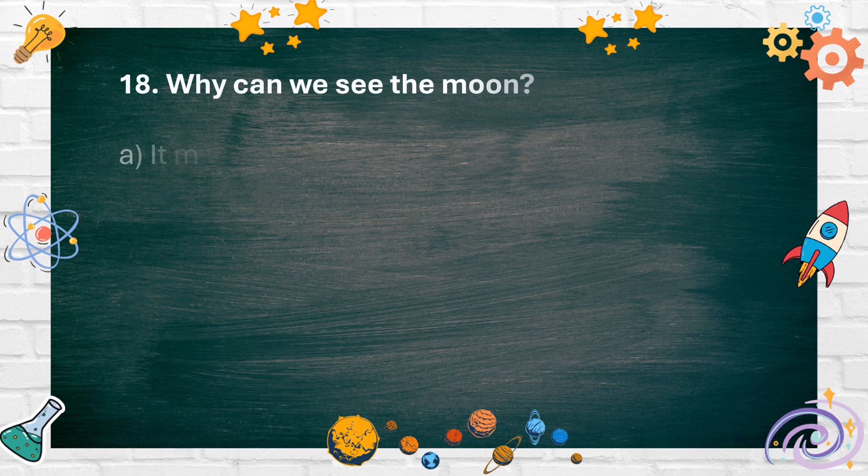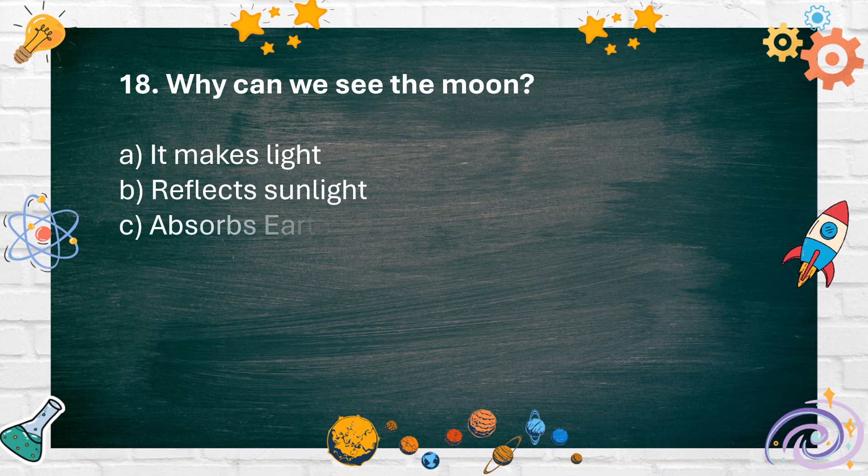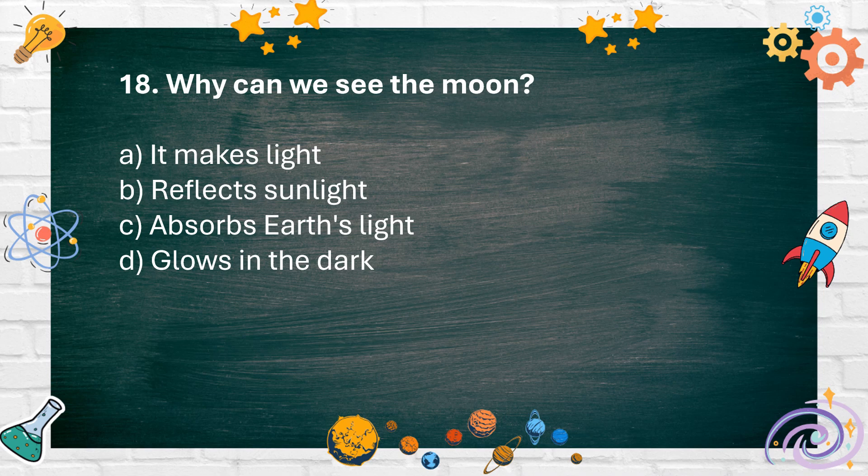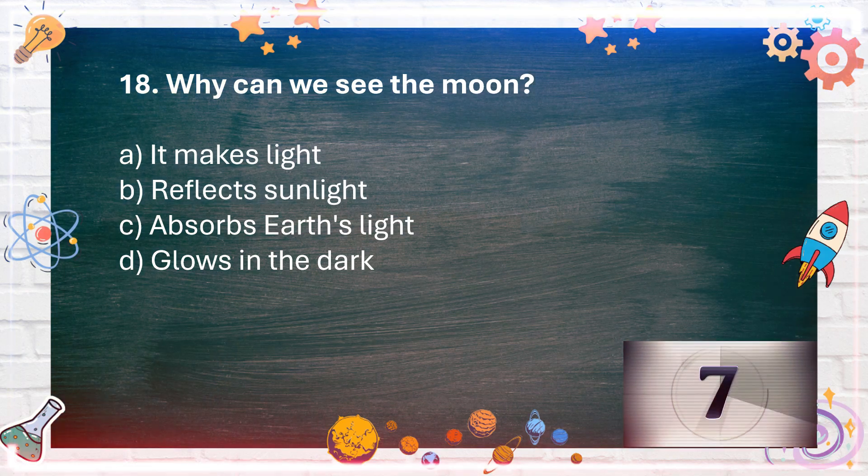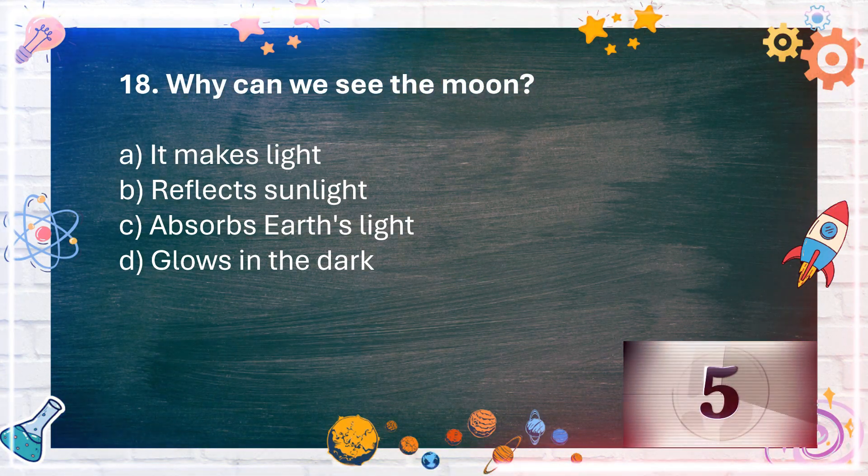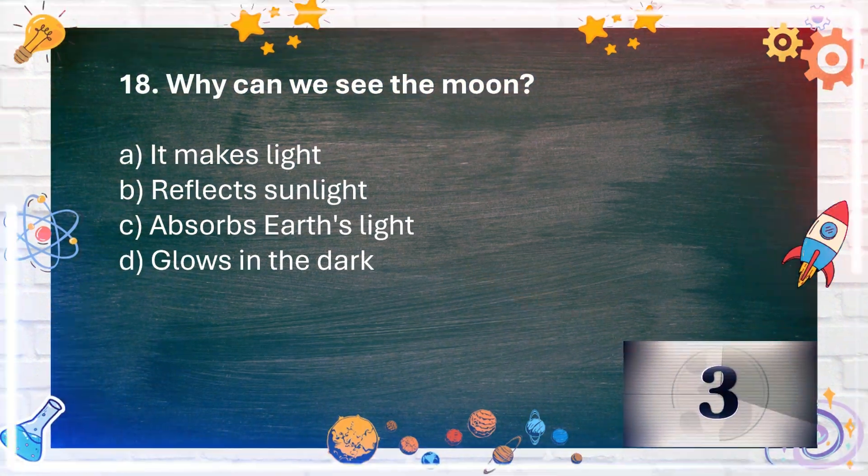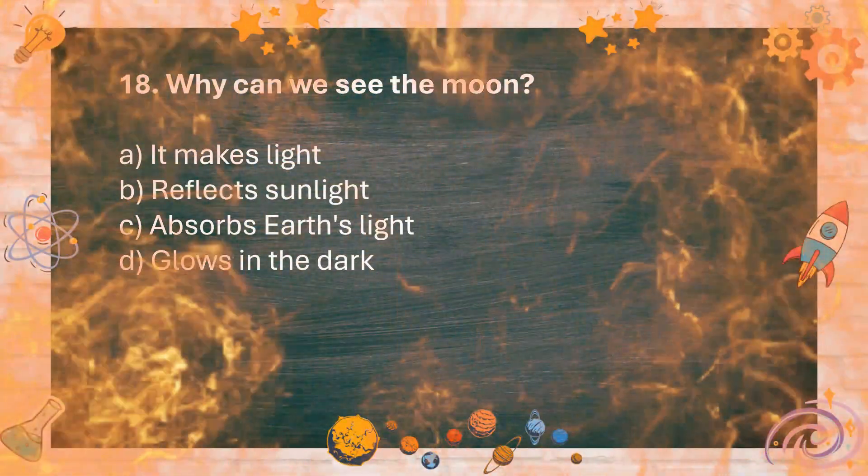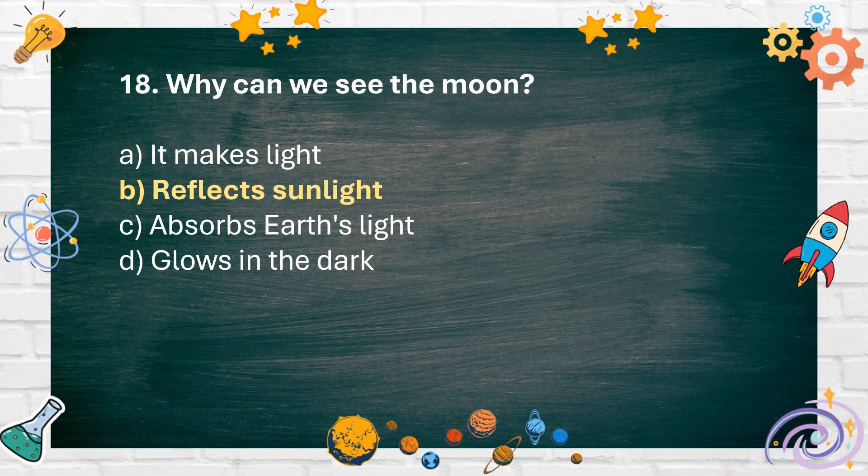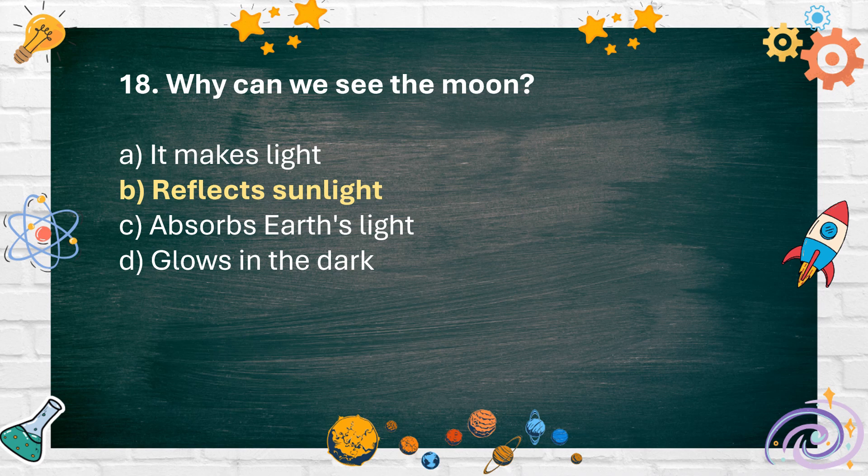Number 18. Why can we see the moon? A. It makes light B. Reflects sunlight C. Absorbs earth's light D. Glows in the dark. The answer is B. Reflects sunlight.